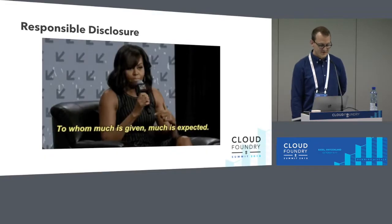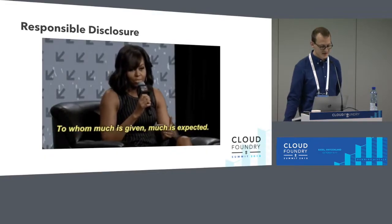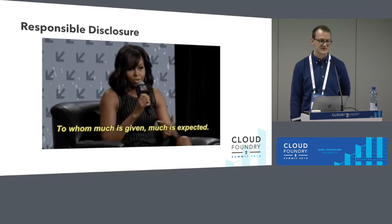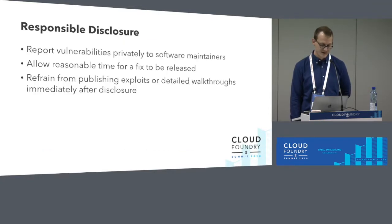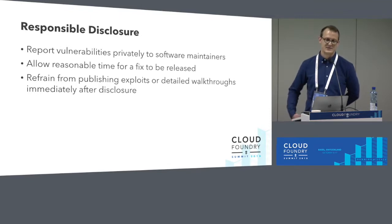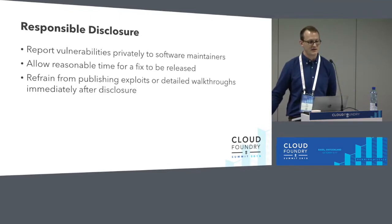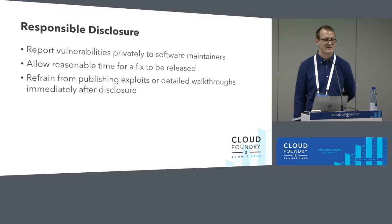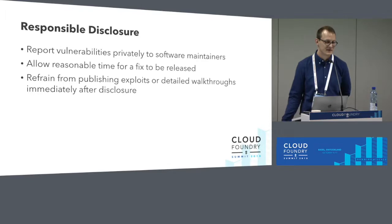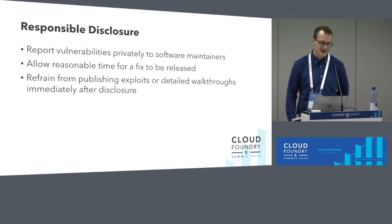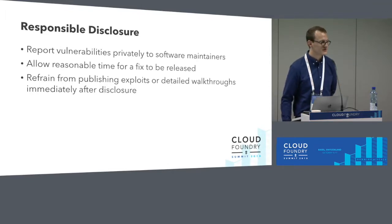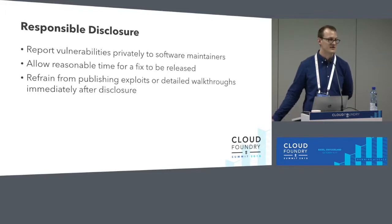The last thing I'm going to cover is responsible disclosure. What we encourage is that people report vulnerabilities to us privately. The concept of responsible disclosure is disclosing to the maintainer of the software privately that you've discovered something, and giving them a reasonable amount of time to fix it before you start talking about it in public. The idea is that when we do the disclosure, we can also provide the community the fixed version so they can remediate at the same time they learn about the issue.